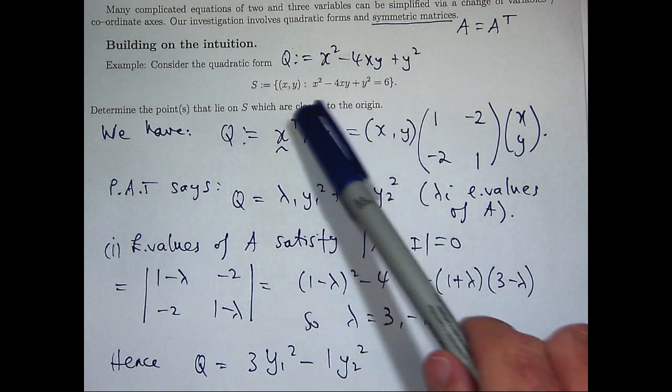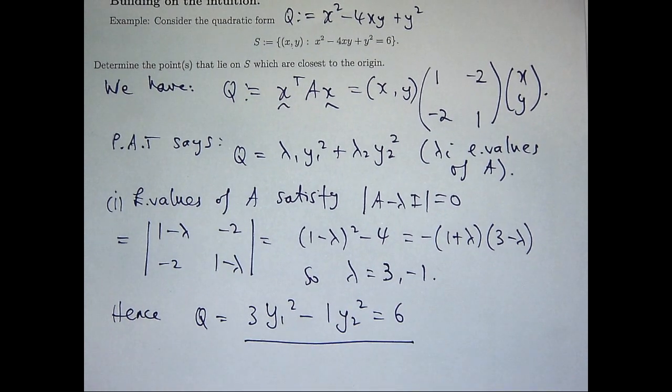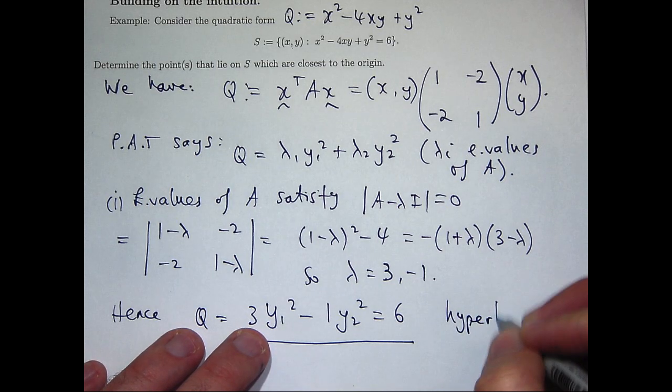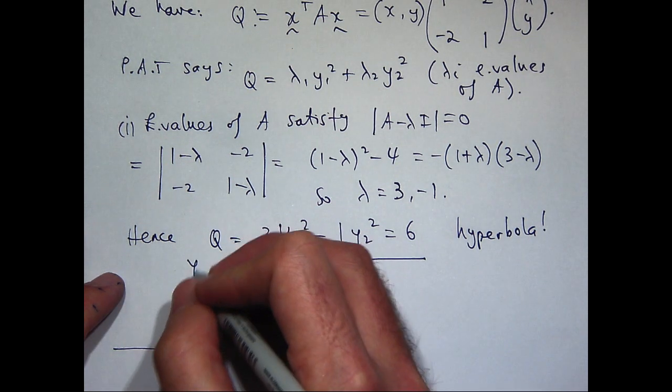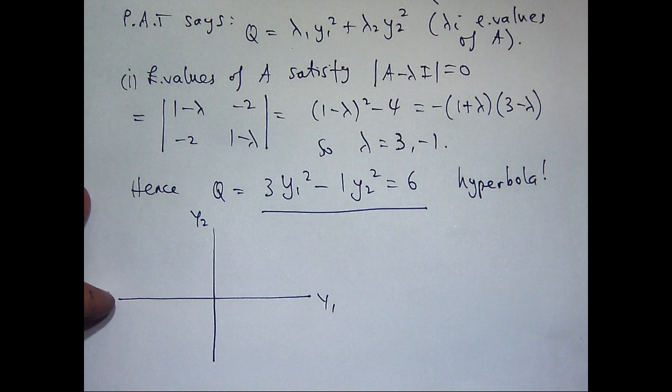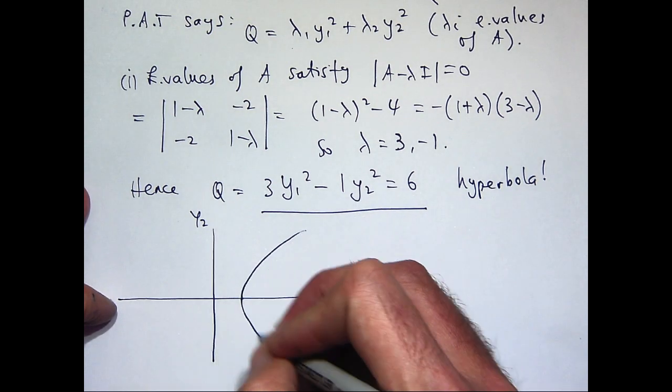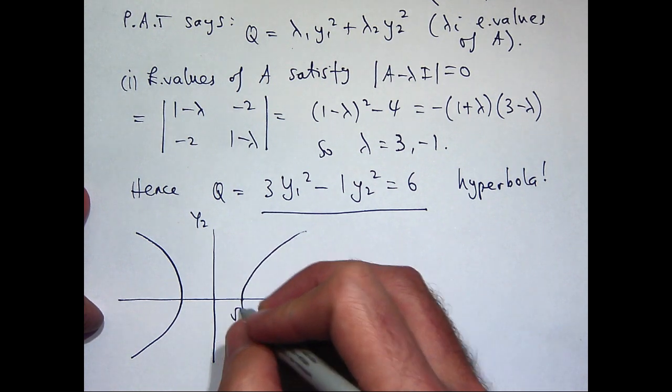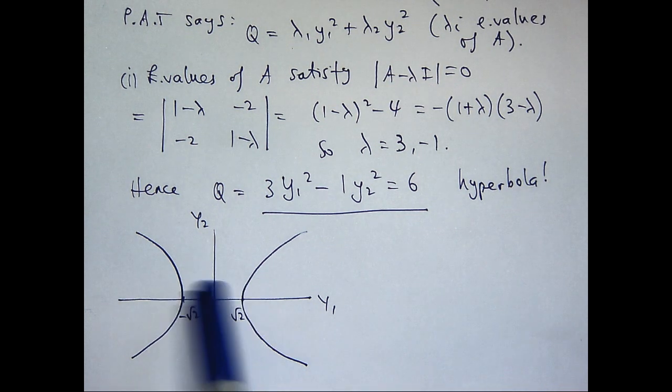The Principal Axes Theorem says that I can write this Q, this quadratic form Q, in this sum of squares with lambda 1 equals 3 and lambda 2 minus 1. We're interested in the case when Q equals 6. What kind of curve is this? It's a hyperbola. Let's sketch this in my new set of axes, y1 and y2. It's going to cross the y1 axis when y1 equals root 2 and negative root 2. You can see our points of interest are here and here because these two points lie closest to the origin.